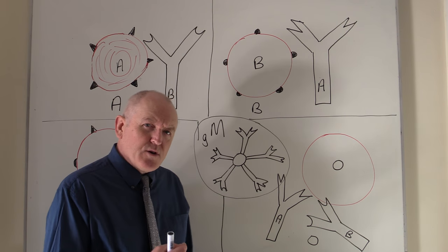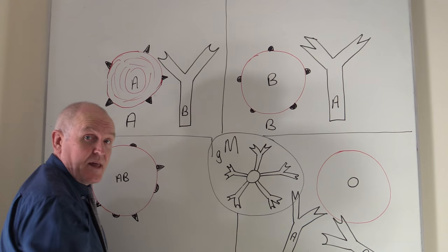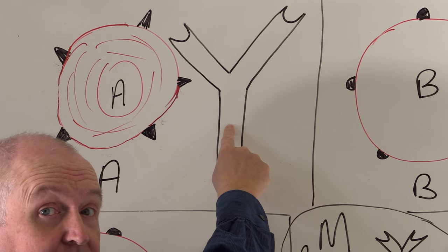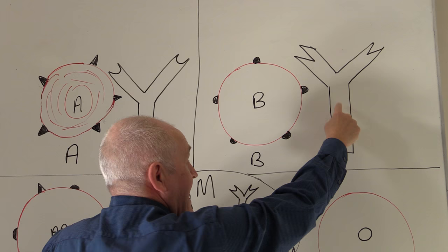Now we've looked at the ABO system and I'm just going to recap that very briefly. Blood group A is determined by the red cell, which has A antigens. If someone is blood group A, they're going to have B antibodies, or anti-B, in their plasma. If someone is blood group B, the red cells are B but there are going to be anti-A antibodies in the plasma.